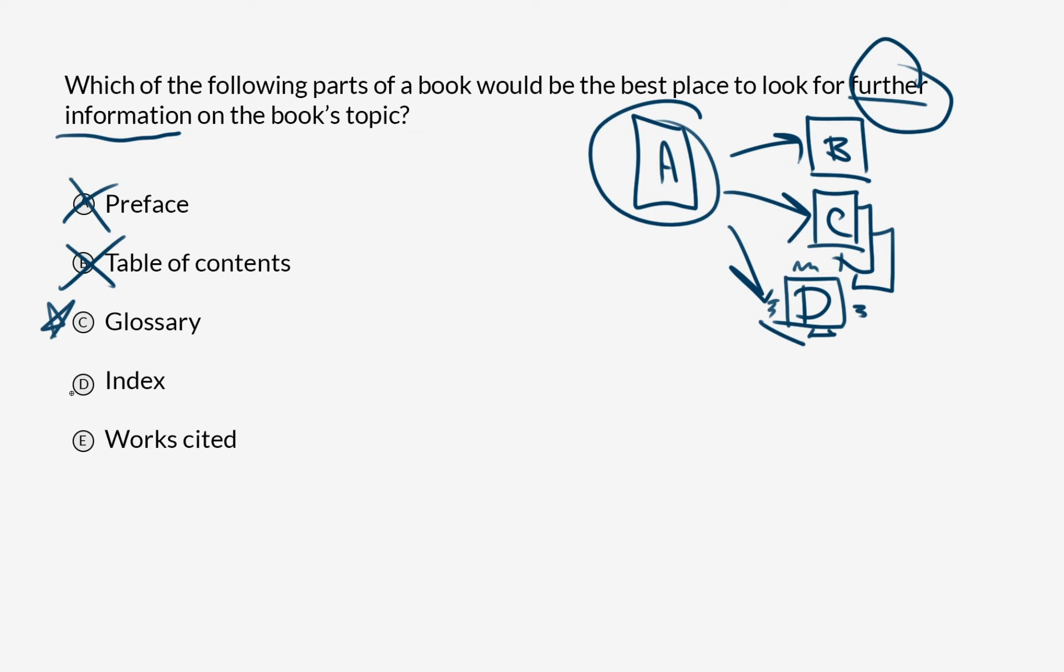The Index is kind of like a Table of Contents but at the back of the book, right? It lists out where things are mentioned by subject. So that still pertains to what's already in the book. We're looking for further information.